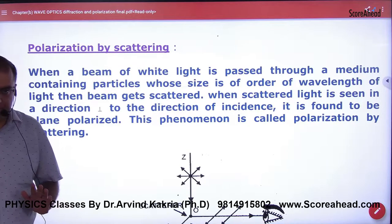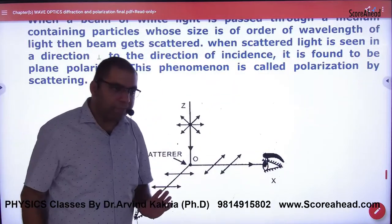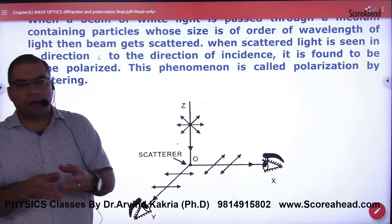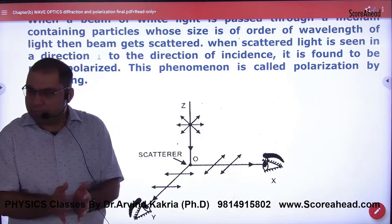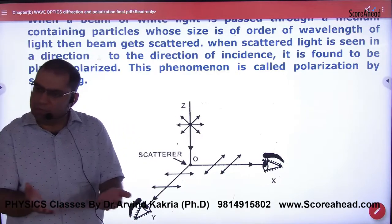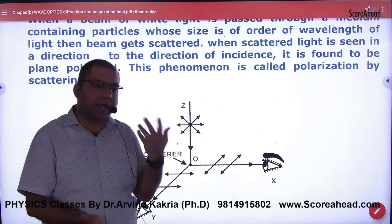Polarization by scattering. If you have some unpolarized light and it hits the particles - the particles are atoms which have electrons in them - and in this light there is an electric field.